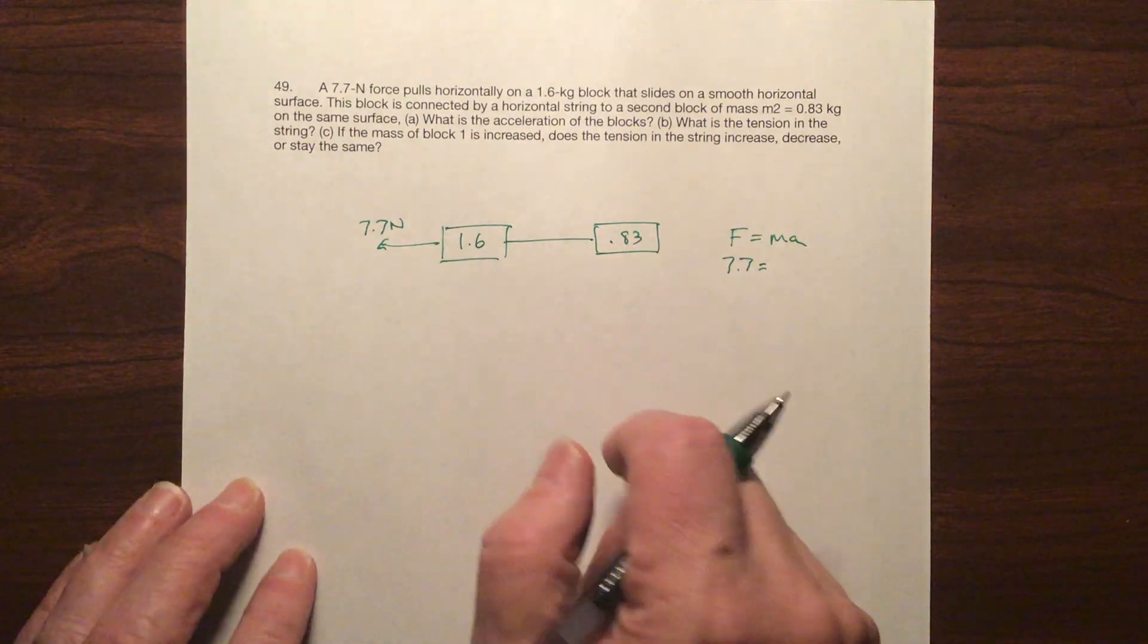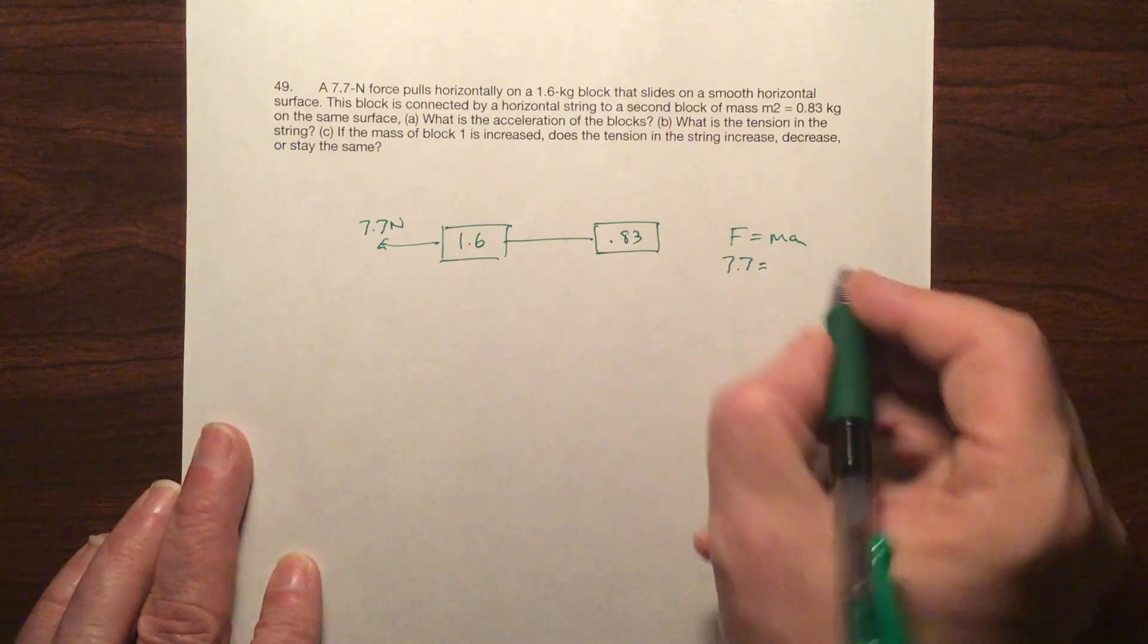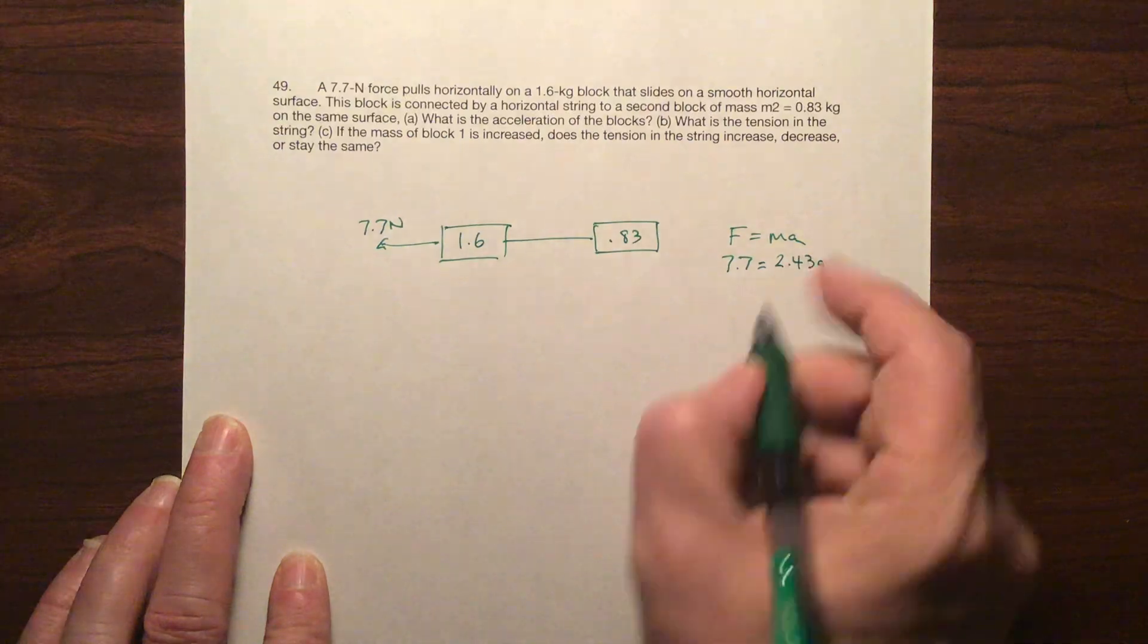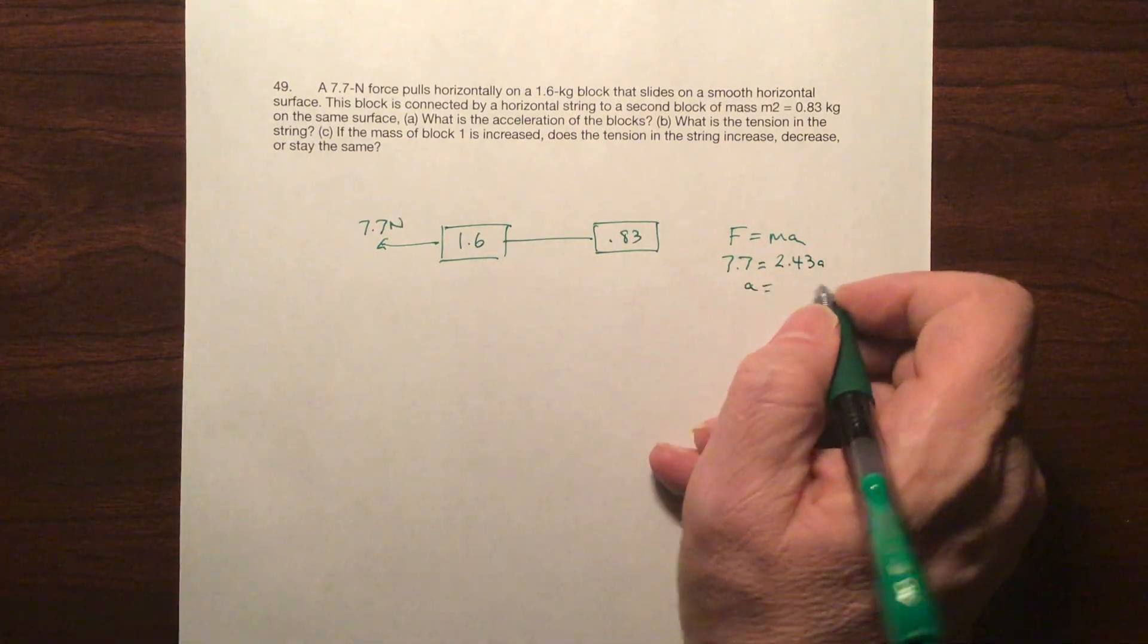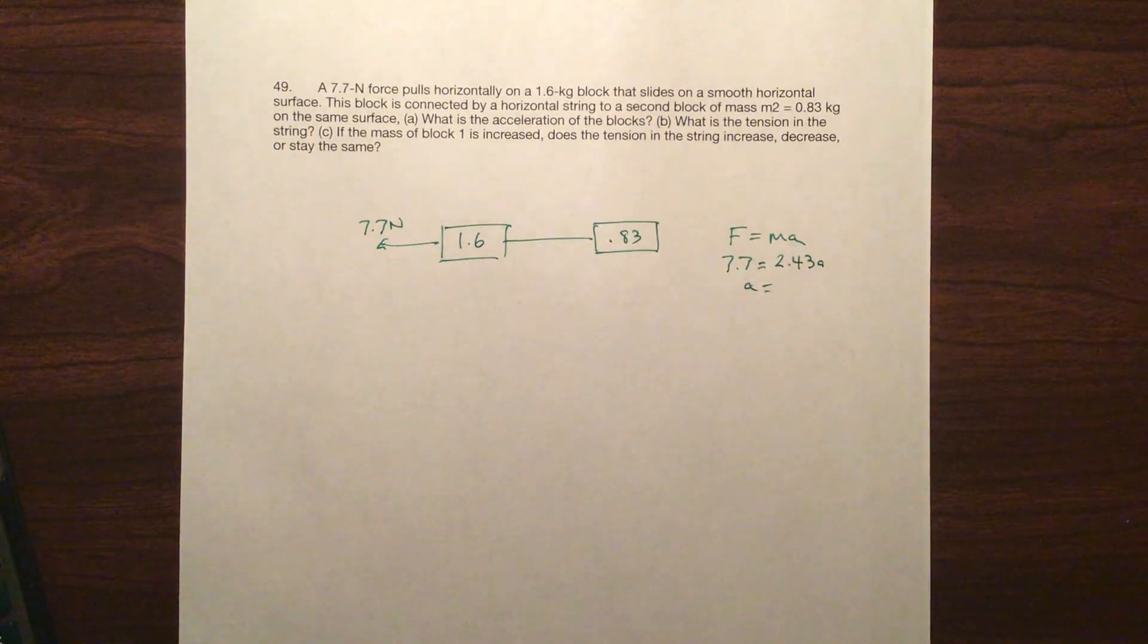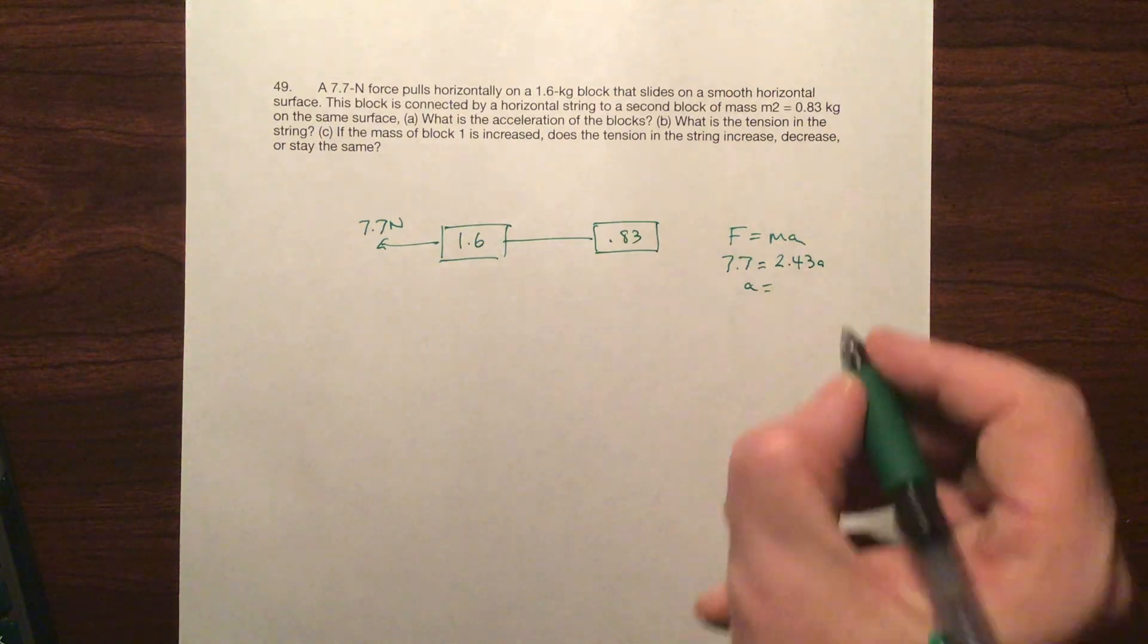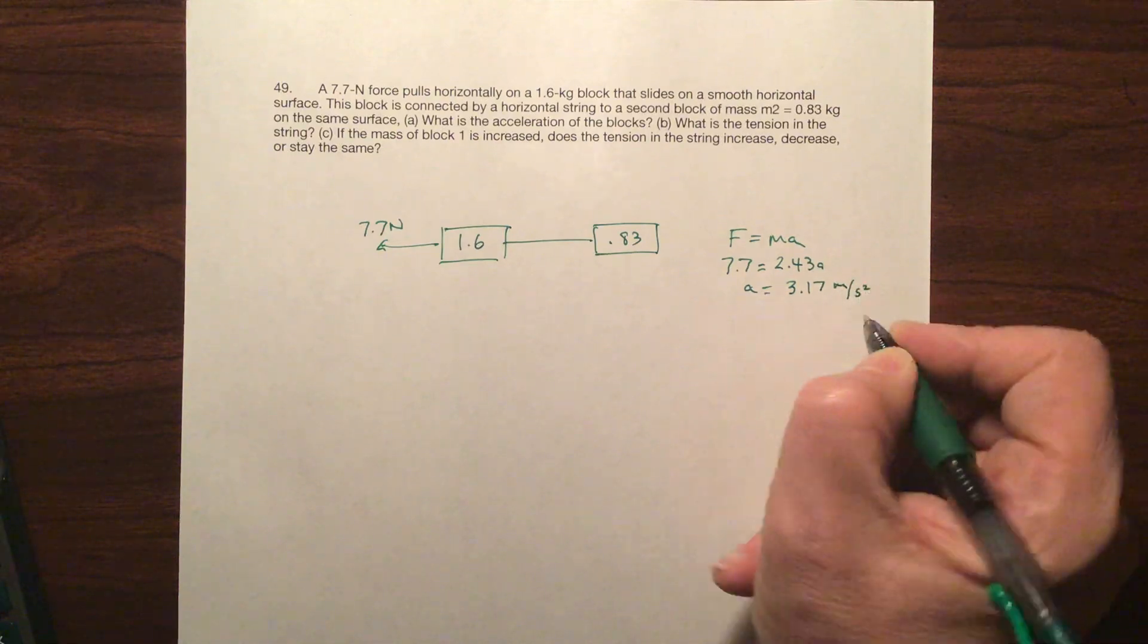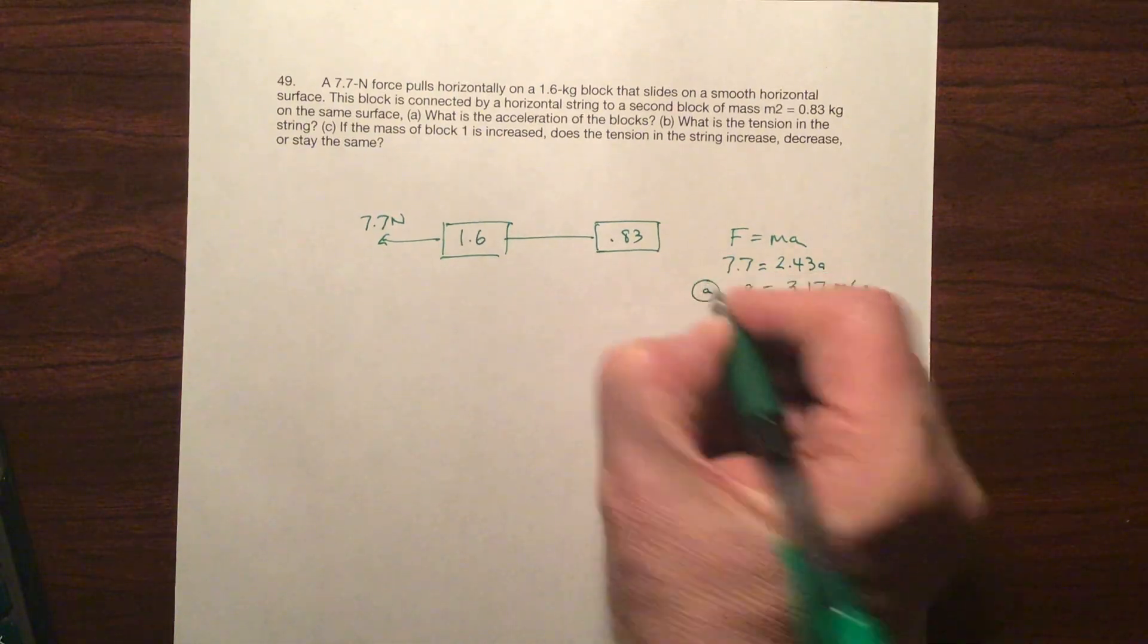So what is that? 2.43 A. Now solve for A. 7.7 divided by 2.43. So A equals 3.17 meters per second squared. Okay, so this is part A.